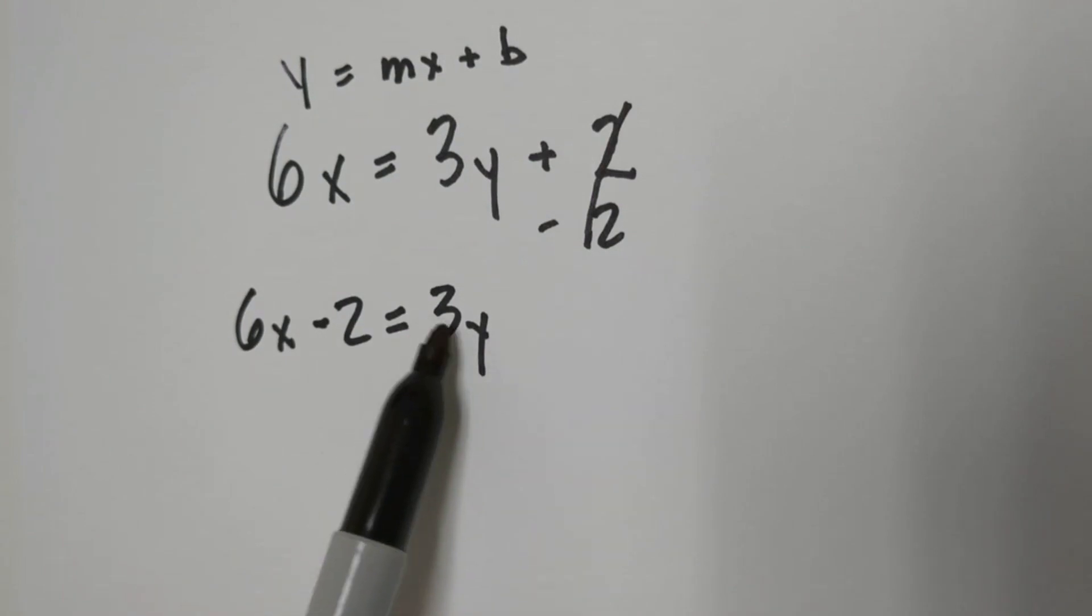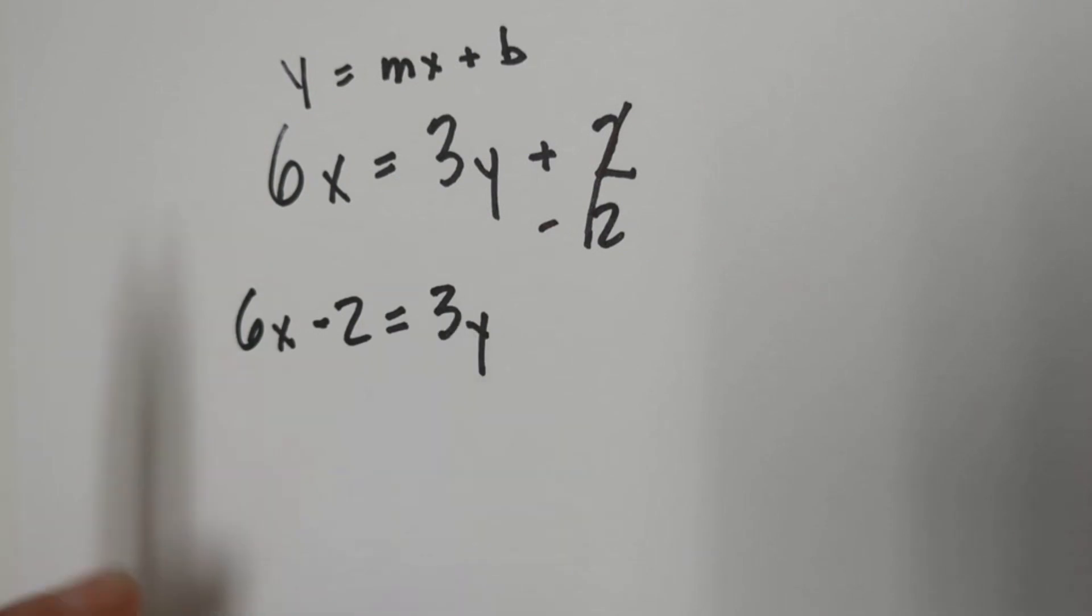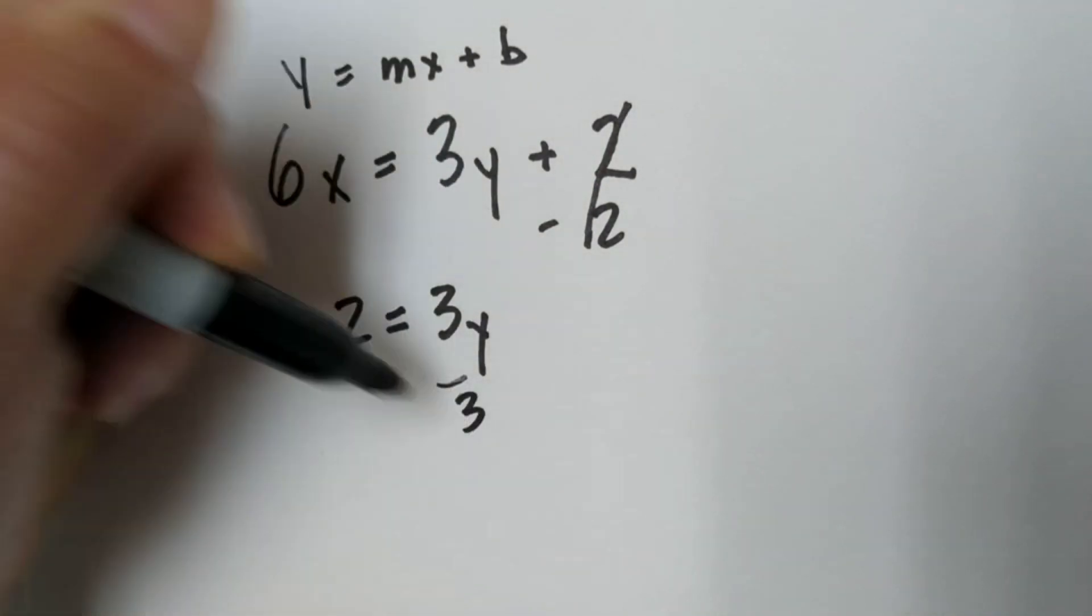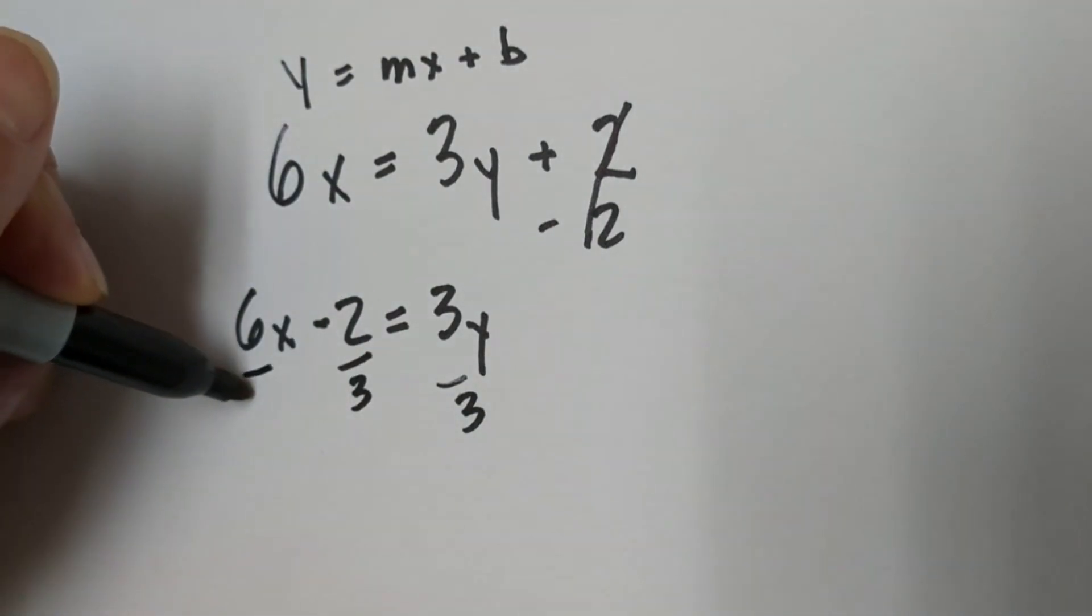Now we have a y by itself, but we have 3 in front of it. 3 times y. So we're going to do an opposite operation. We're going to divide everything by 3.